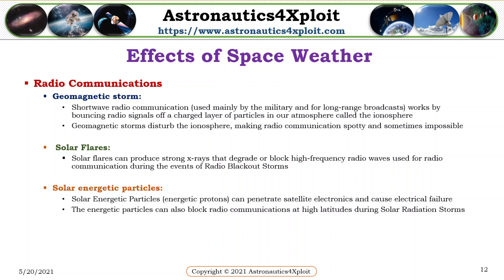Radio communications. Short-wave radio communication, mainly used by the military and for long-range broadcasts, works by bouncing radio signals off a charged layer of particles in our atmosphere called the ionosphere. Geomagnetic storms disturb the ionosphere, thereby making radio communications spotty and sometimes impossible. Solar flares can produce strong X-rays that degrade or block high-frequency radio waves used for radio communication during radio blackout storms. Solar energetic particles can penetrate satellite electronics and cause electrical failure. The energetic particles can also block radio communications at high latitudes during solar radiation storms.